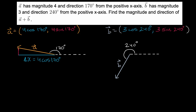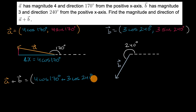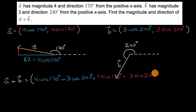When we take the sum of the two vectors, vector A plus vector B, we just add the corresponding components. The x component is four cosine of 170 degrees plus three cosine of 240 degrees, and the y component is four sine of 170 degrees plus three sine of 240 degrees.